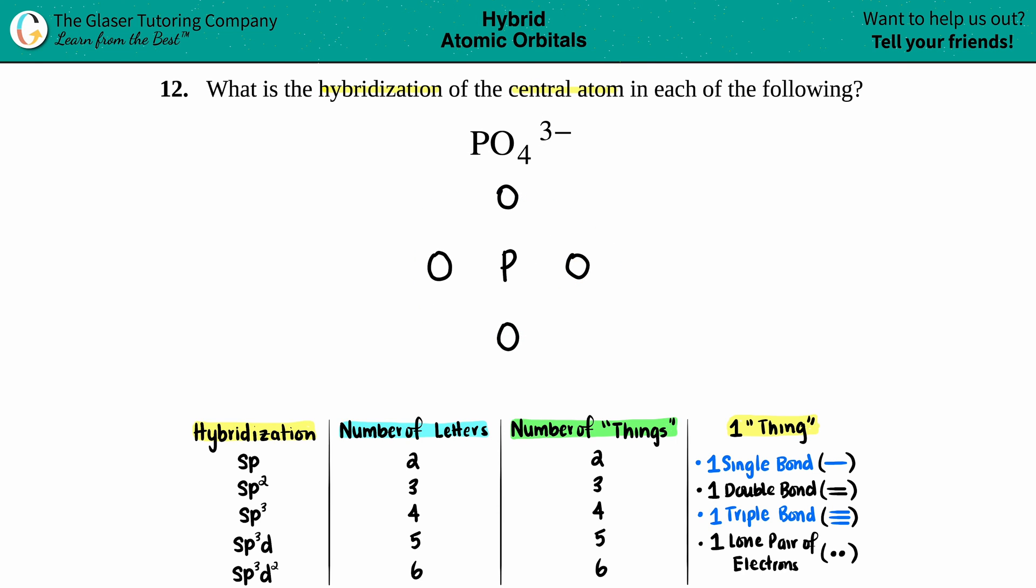Now draw your valence electrons. Phosphorus is in group 15 or 5A, so it has five valence electrons: 1, 2, 3, 4, 5. And each oxygen has six: 1, 2, 3, 4, 5, 6. 1, 2, 3, 4, 5, 6. 1, 2, 3, 4, 5, 6. And then 1, 2, 3, 4, 5, 6.